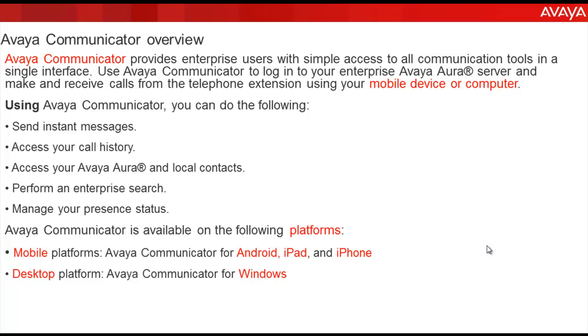Using Avaya Communicator you can do the following things: you can send instant messages, access your call history, use your Avaya Aura and local contacts, perform an enterprise search, and manage your presence status as well.